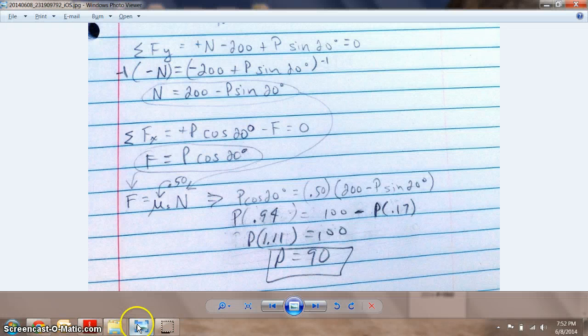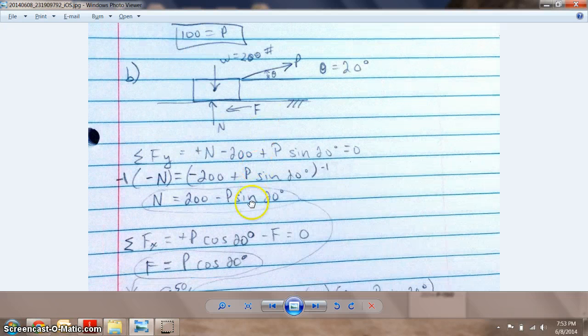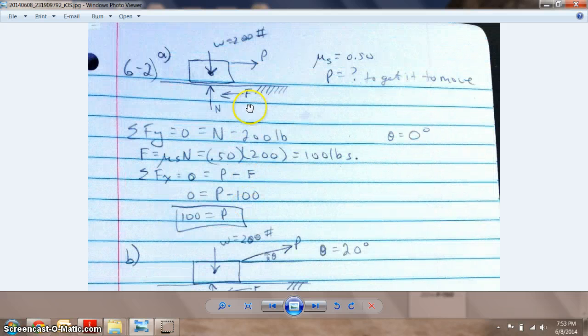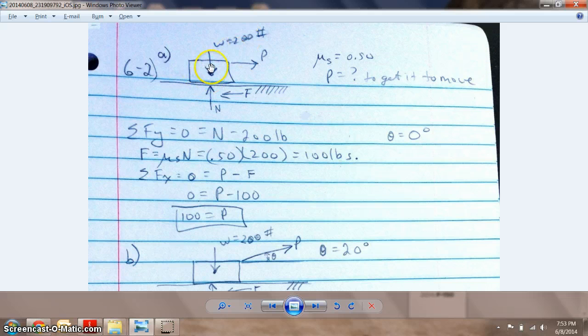Alright, I want to do problem 6-2. It's a two-part problem. The setup is there's a 200 pound weight sitting on this grounded floor. The friction coefficient, static friction coefficient denoted by mu, is 0.5 between these two materials. That's usually a material property, so between the material of the weight and the floor, our coefficient of friction is 0.5.